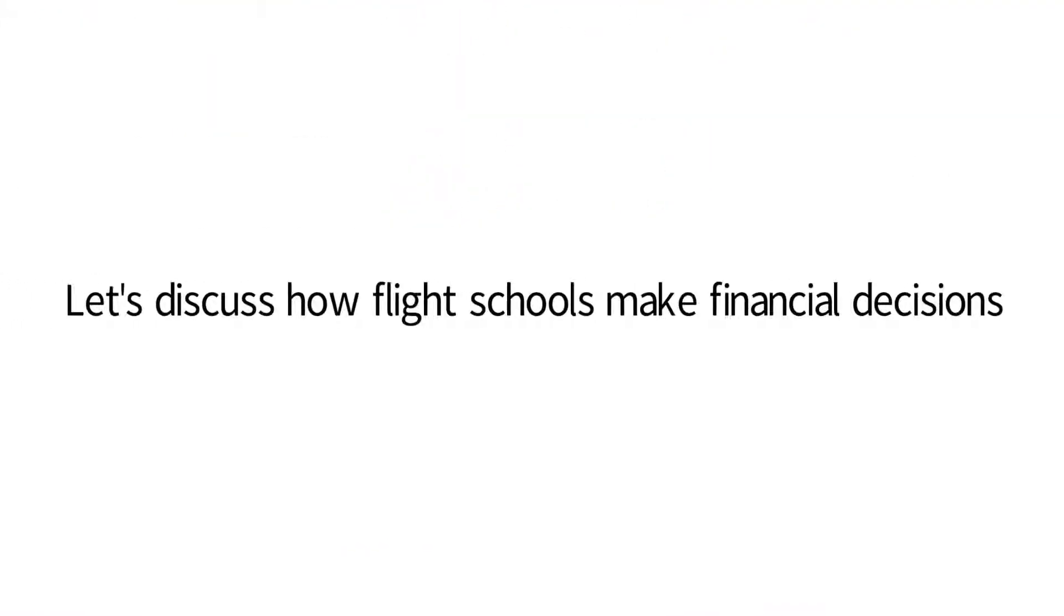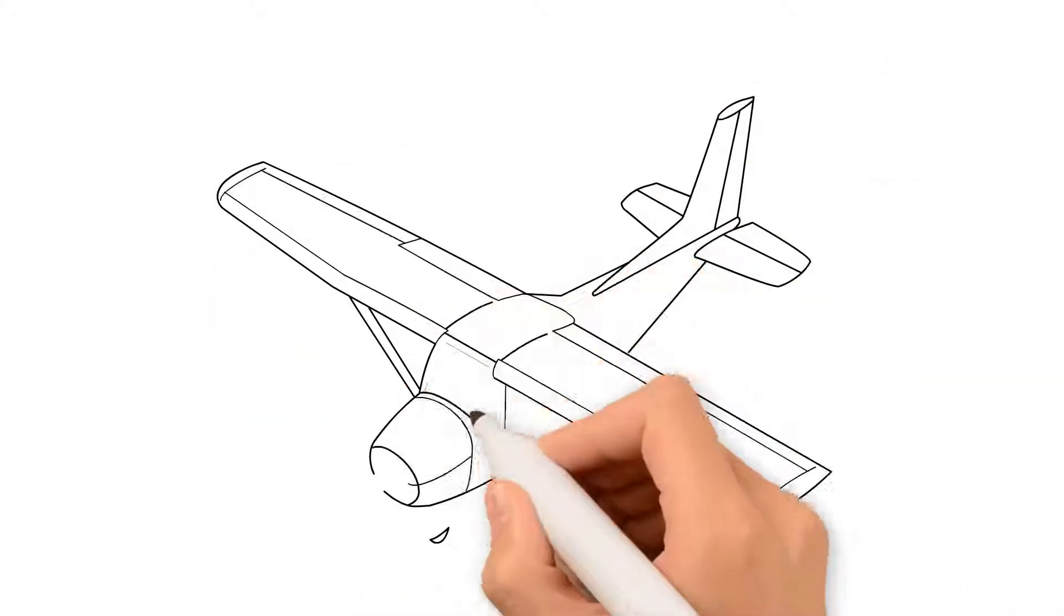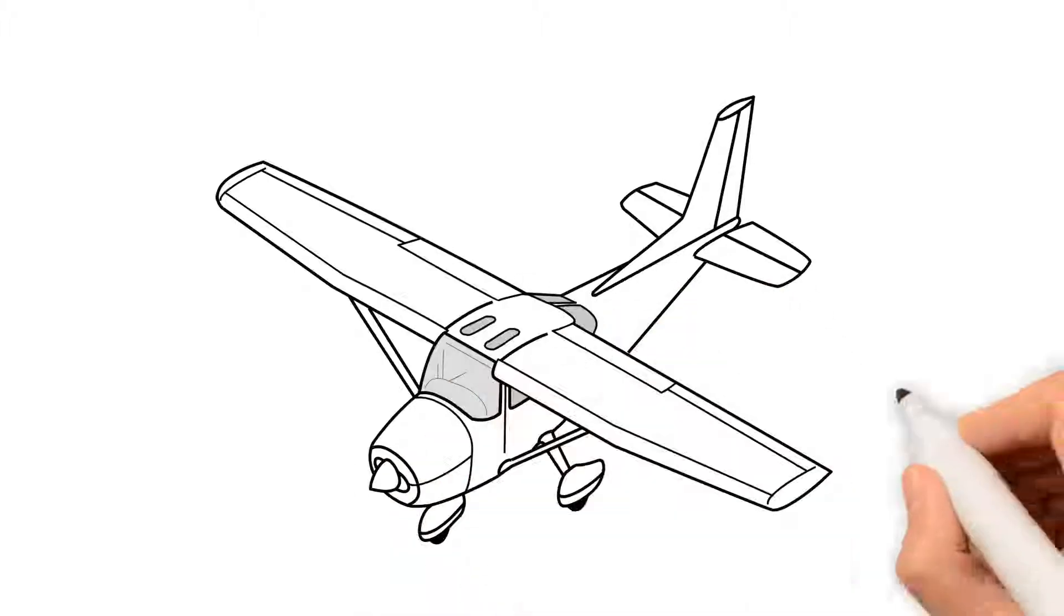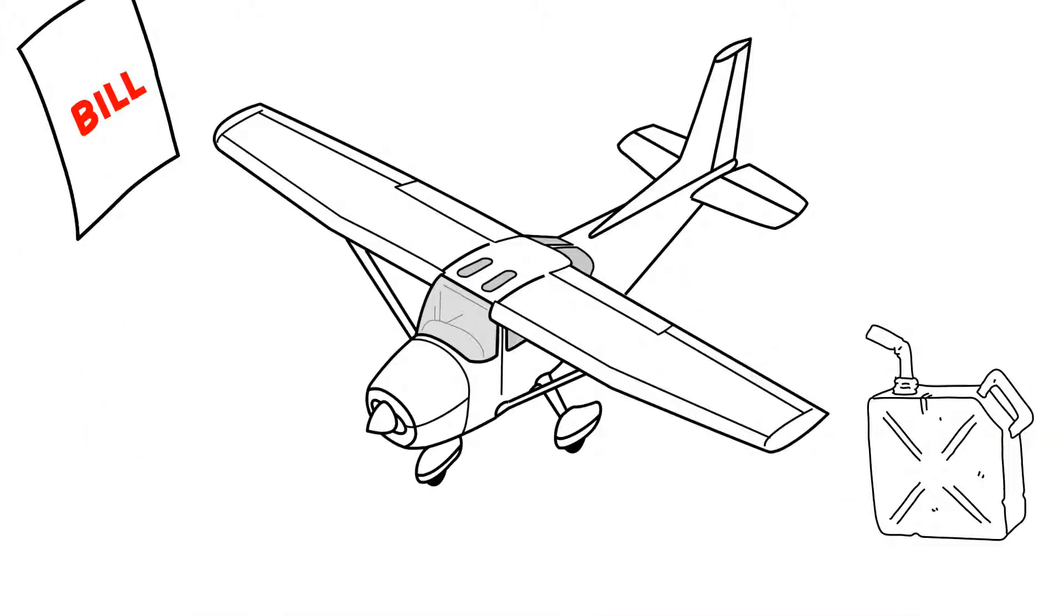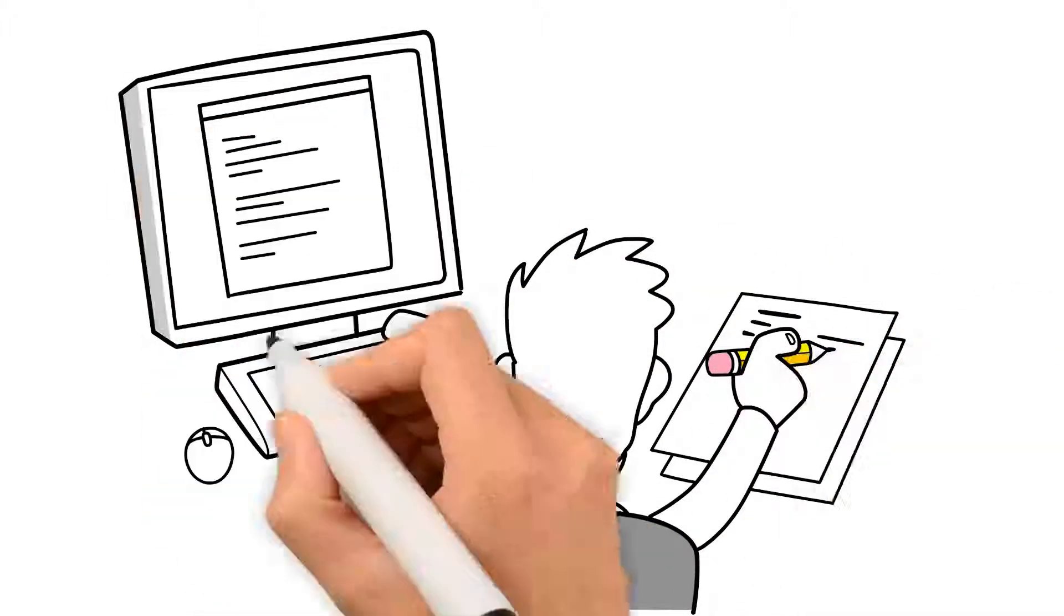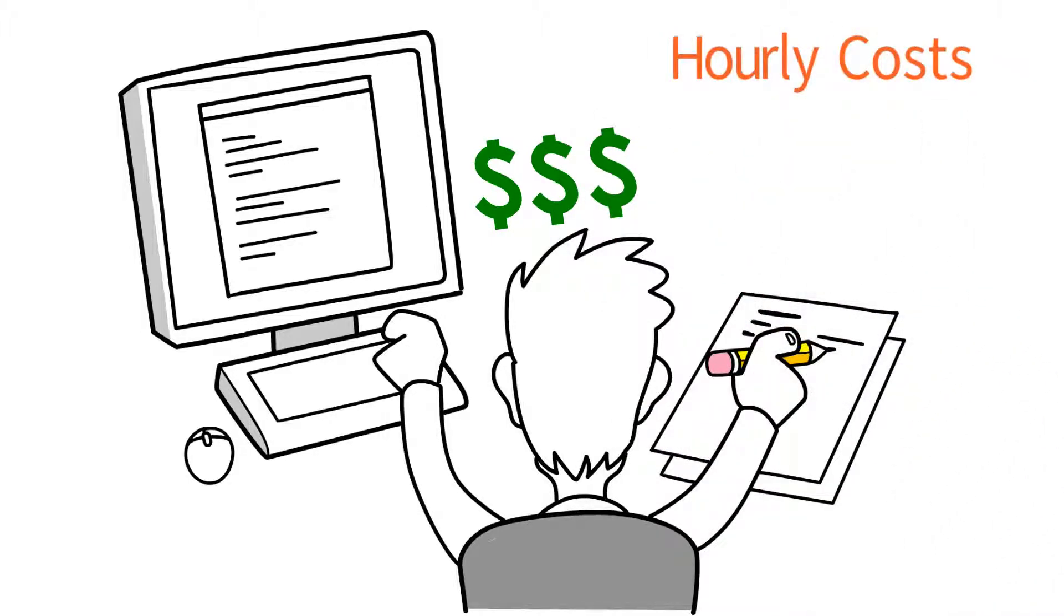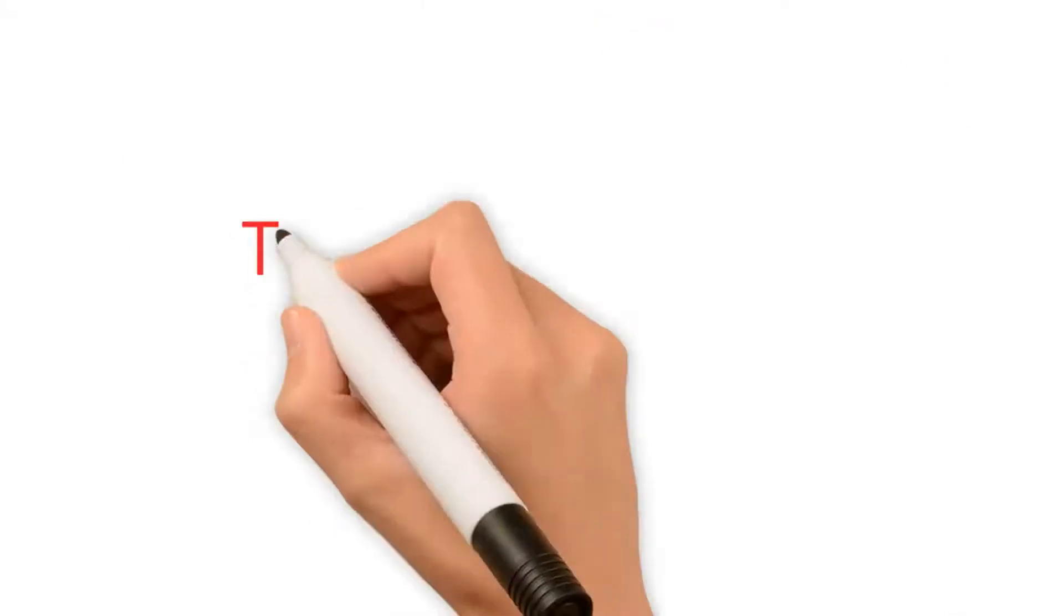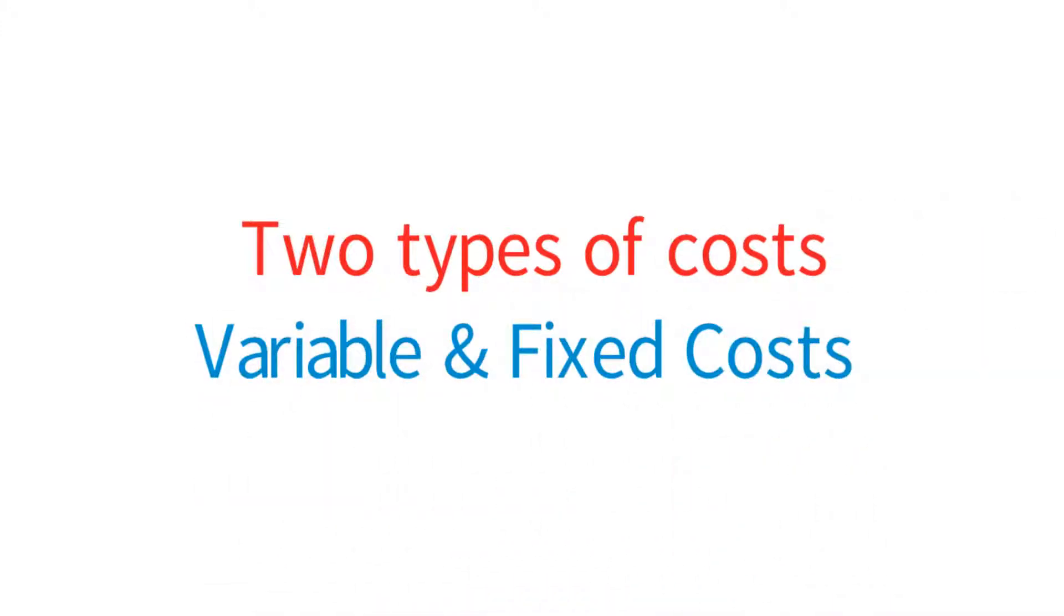Let's discuss how flight schools make financial decisions. Flight schools have costs. When an airplane flies, it burns fuel and oil, and every month the school pays insurance bills. In order to make money, flight schools need to charge you an hourly rate. In order to determine this rate, they need to know their own hourly costs and then mark them up. There are two types of costs: variable costs and fixed costs.